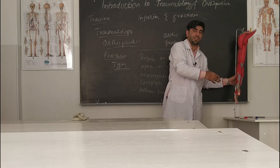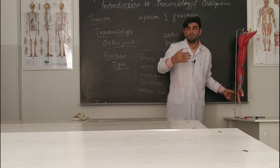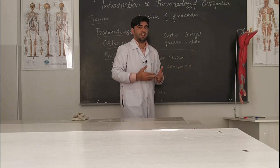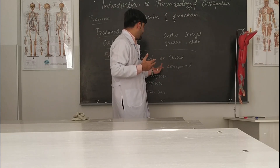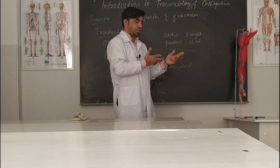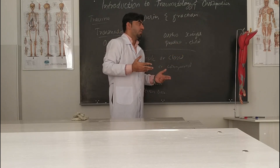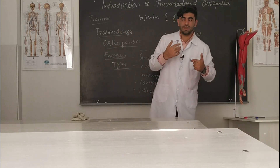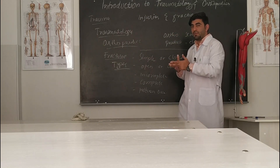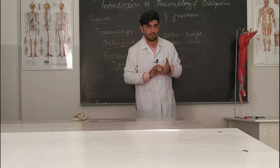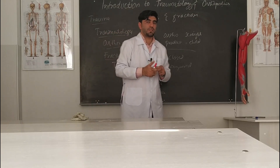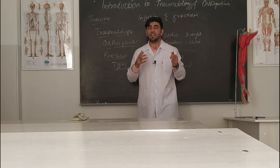An open or compound fracture is the opposite. If there is a bone injury or fracture and the external skin is also damaged — there is a wound, bleeding, or any injury to the external skin — it is called an open fracture. In an open fracture there is a wound or rupture of the skin externally, while in a simple fracture there is no skin rupture. Compound fracture requires urgent emergency treatment.